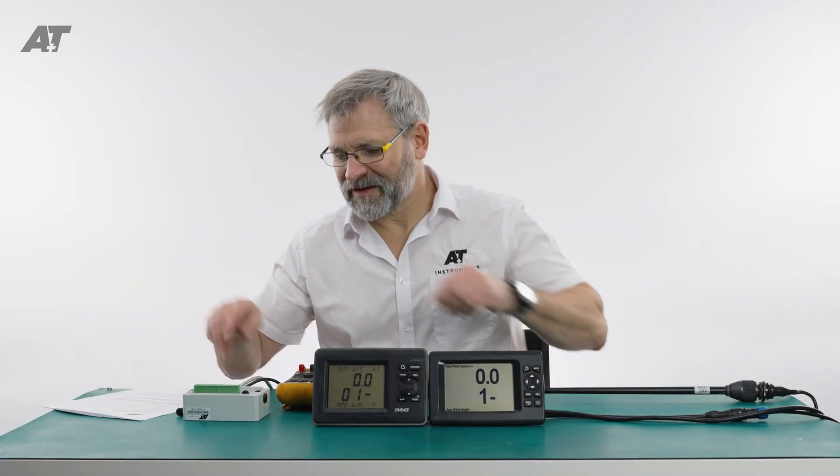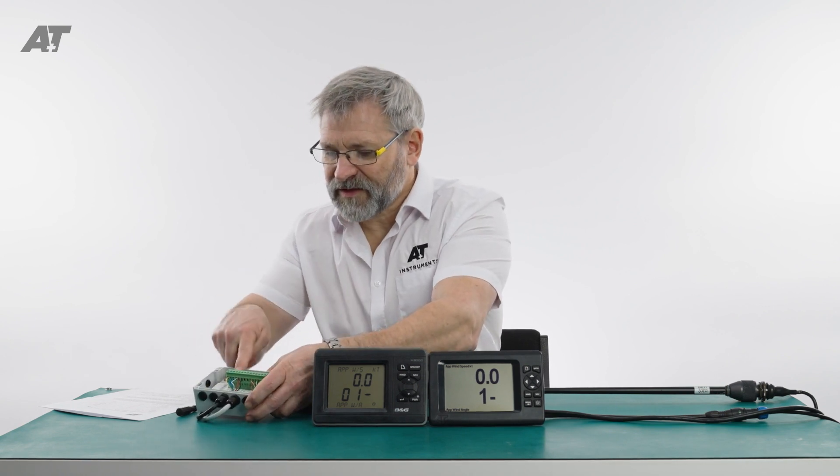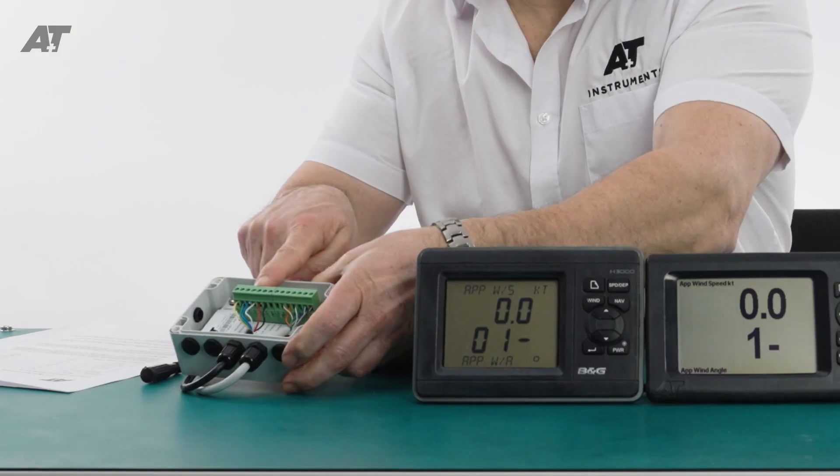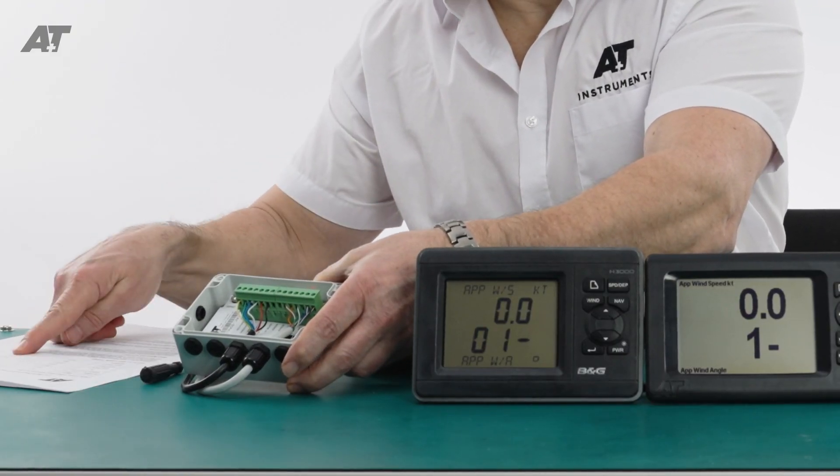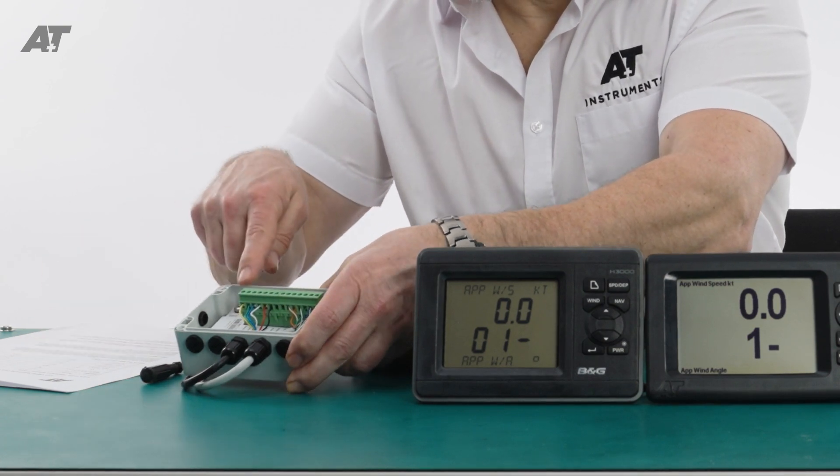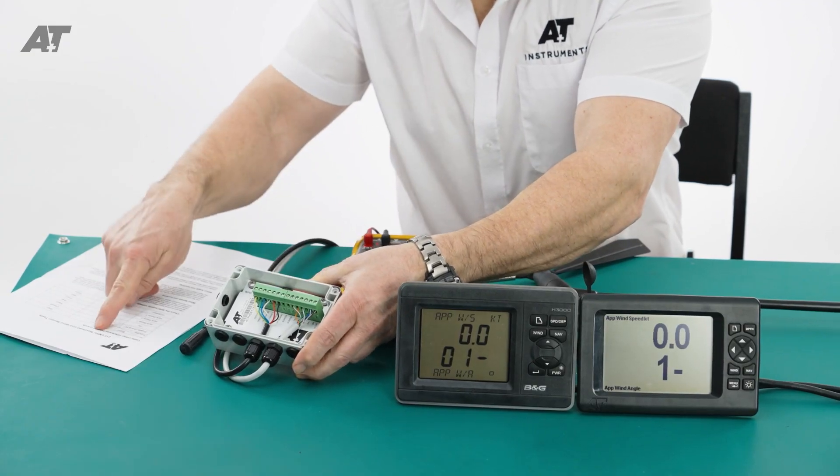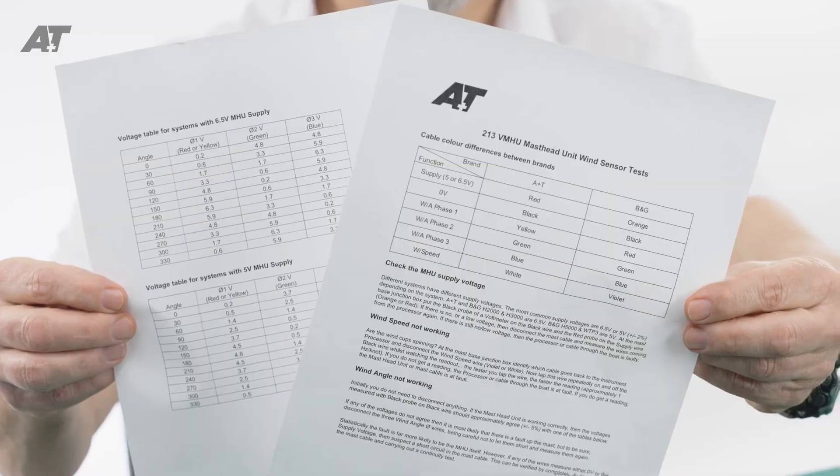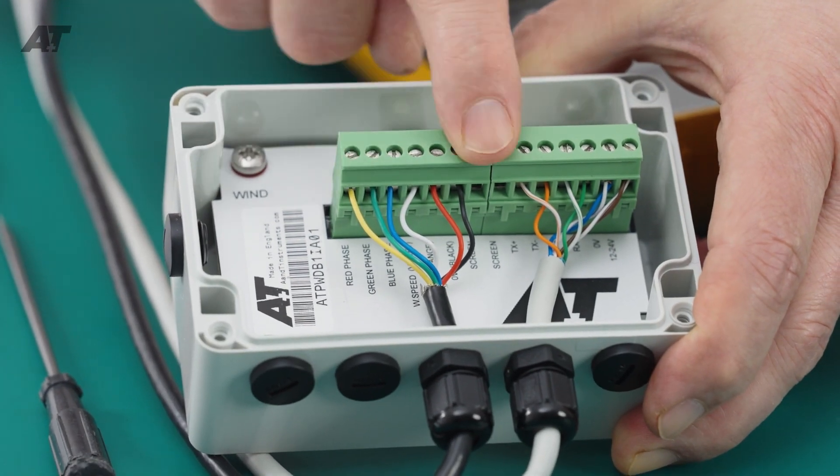You need to find where the wind sensor wires connect to the instrument processor. The steps below apply to any B&G system including H2000, H3000, H5000, and WTP. We're showing the steps here with an A&T interface. This is where the masthead unit connects. There are two mast cable color codes as shown on the accompanying sheet. Here we show the A&T colors connected into the masthead unit connector block.